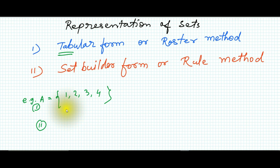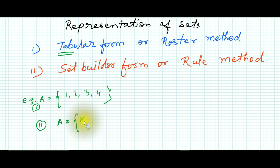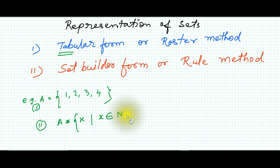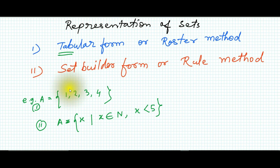For set-builder form, using the same set, we write: A = {X | X ∈ N and X < 5}. That means A is a set having member X, where X belongs to natural numbers and X is less than 5. This is the set-builder form.